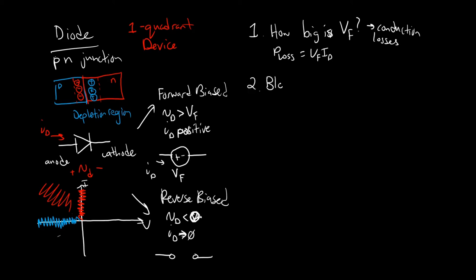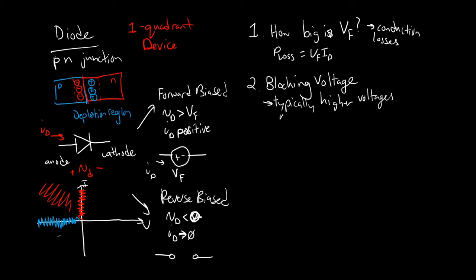We're also interested in the blocking voltage. In order to block higher potentials, you typically have to make the device bigger or use a different kind of semiconductor structure. Higher blocking voltages tend to make the device slower and lossier — there may be more resistance, or VF will increase. If you're trying to convert 1,000 volts into 500 volts and you need a diode, you're going to need to block something around 1,000 volts. It's a requirement of the circuit.